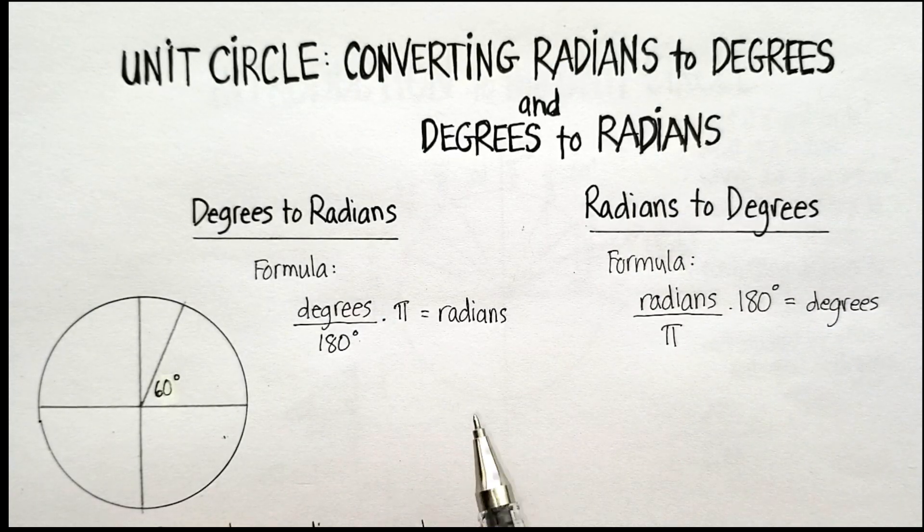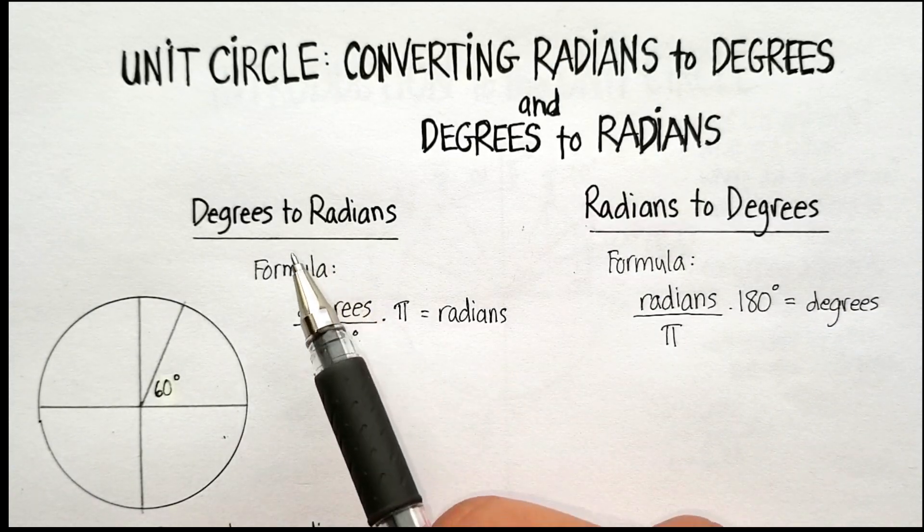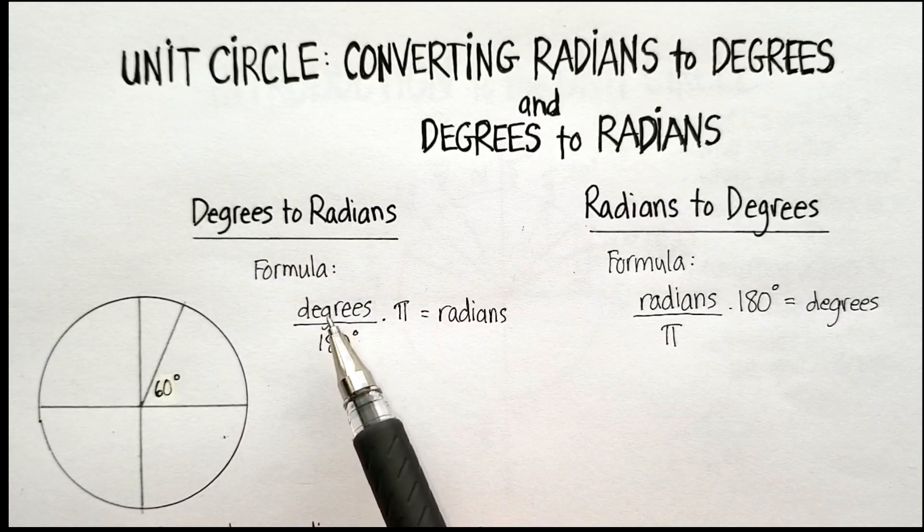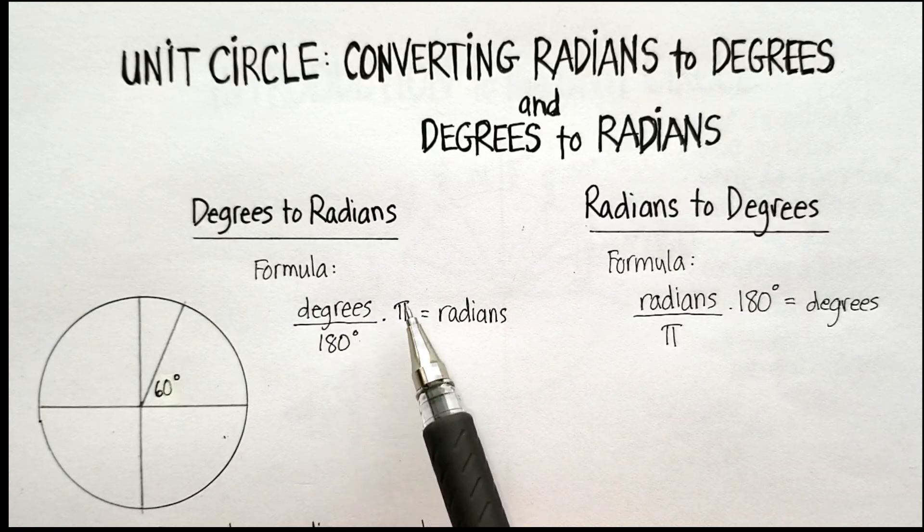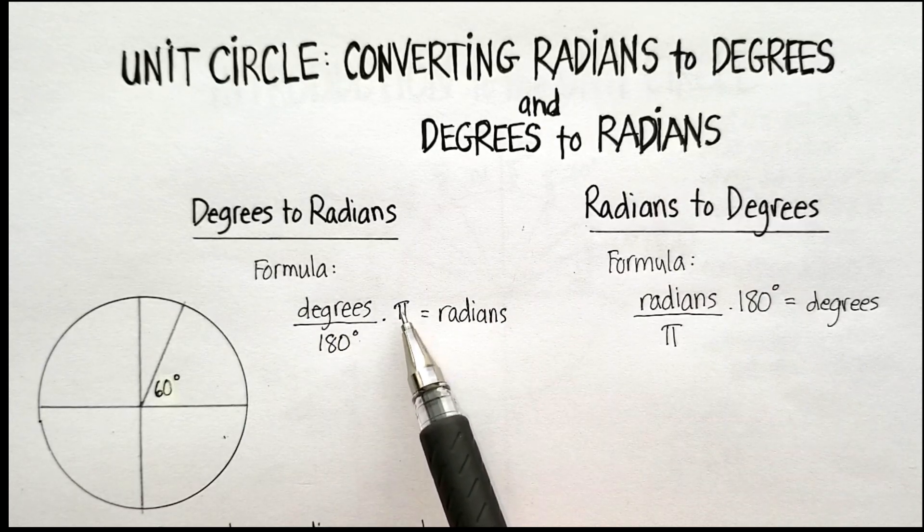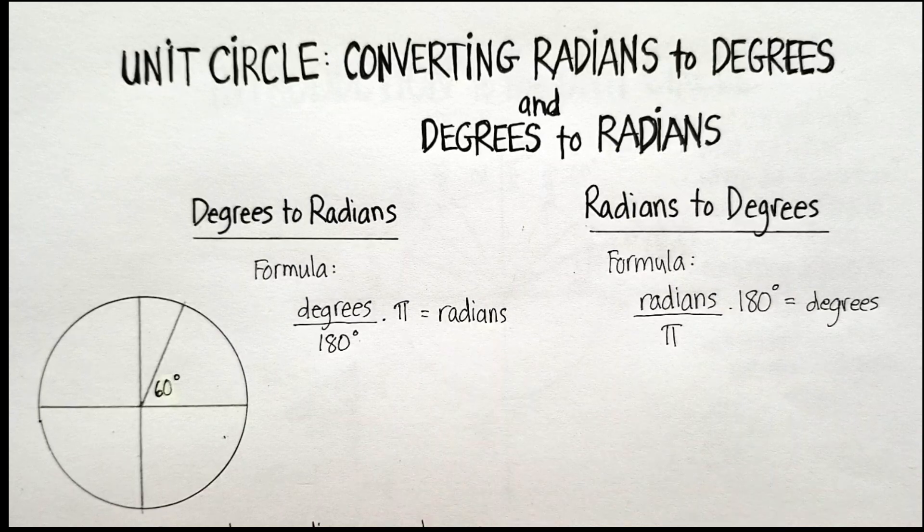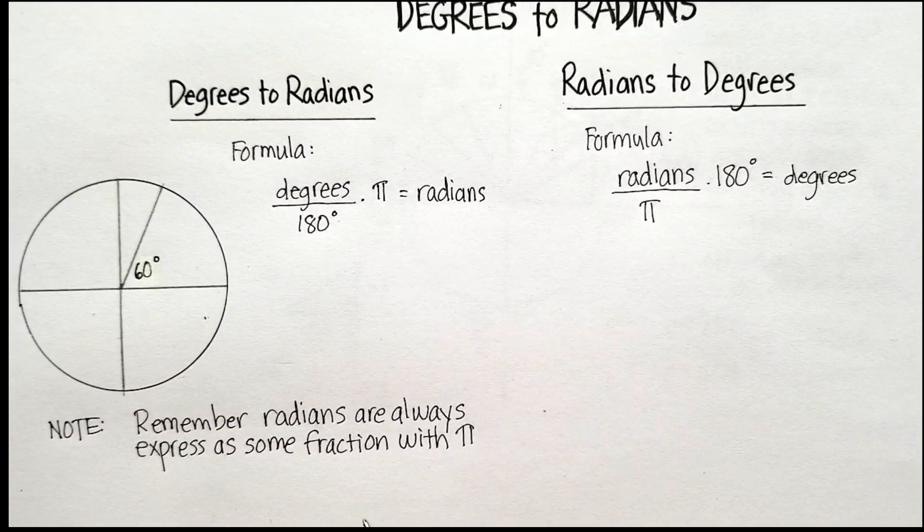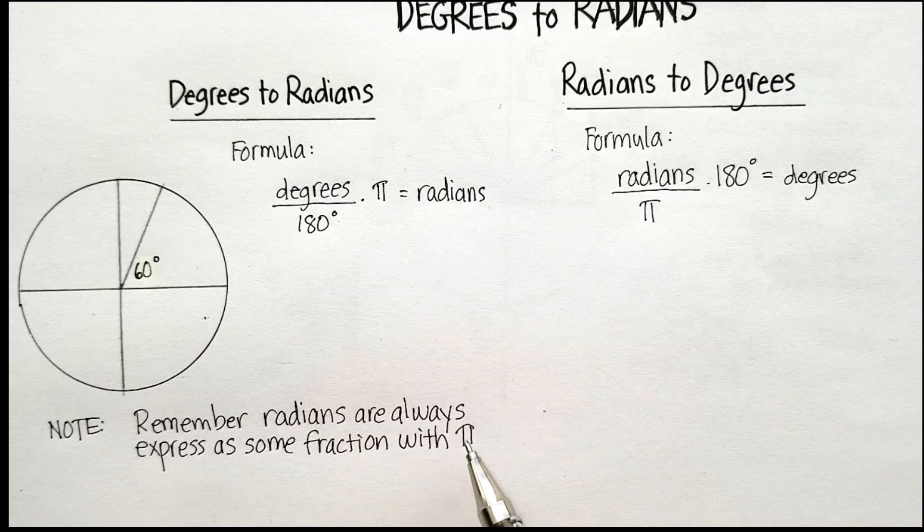So there's two formulas that you need to remember. To convert from degrees to radians, you simply use the formula degrees over 180 times pi will equal the number of radians. Now remember, radians are always expressed as some kind of a fraction with pi.